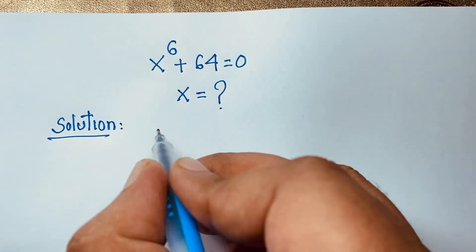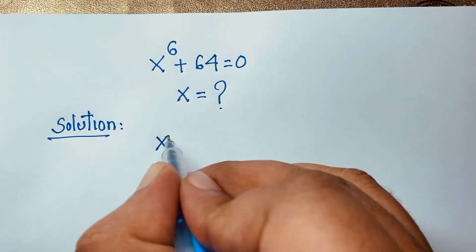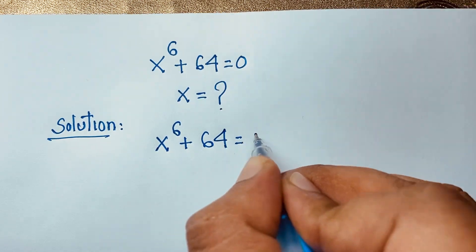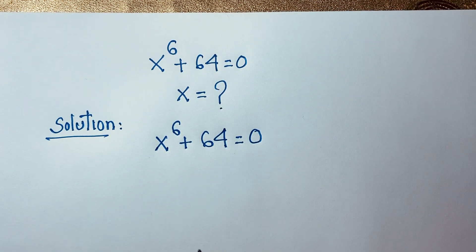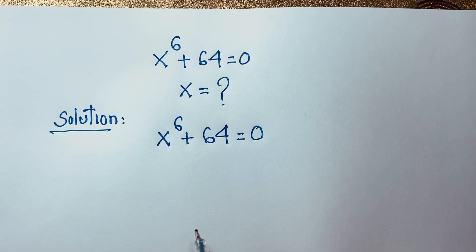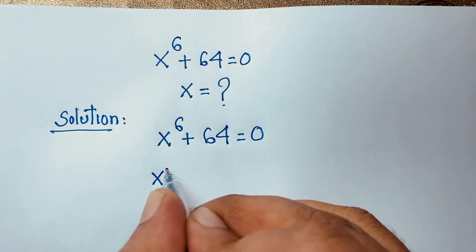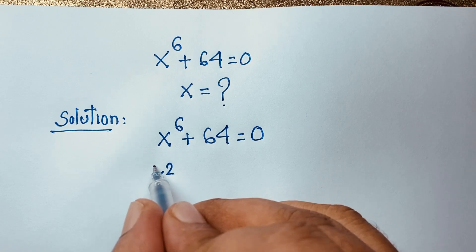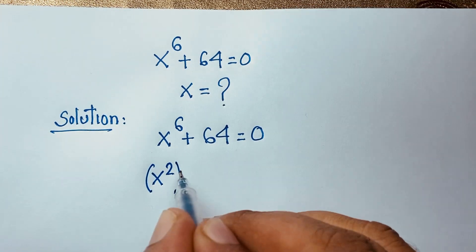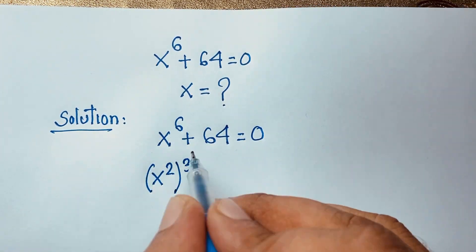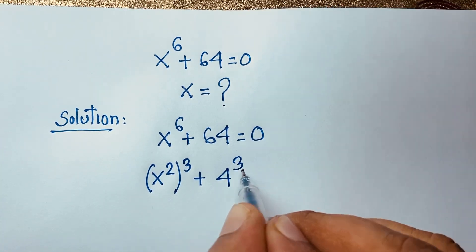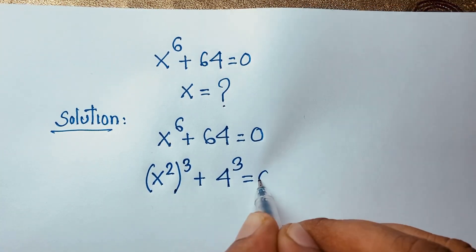Our question: x to the power 6 plus 64 is equal to 0. First of all, I can see that x to the power 6 can be written as x to the power 2, whole to the power 3 — because 2 times 3 is 6. And 64 can be written as 4 to the power 3. So we have x squared cubed plus 4 cubed is equal to 0.